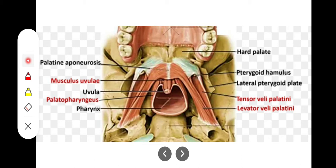During speech, the muscles also close the oropharyngeal isthmus — the separation between the nasopharynx and the oropharynx. The five muscles are: tensor veli palatini, levator veli palatini (which tense and elevate the soft palate), musculus uvulae (associated with the uvula, the backward projection on the soft palate), and the palatopharyngeus and palatoglossus muscles.